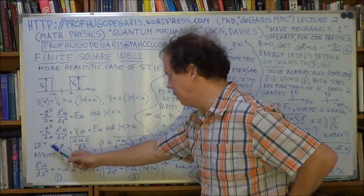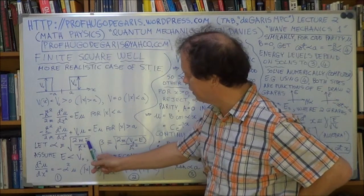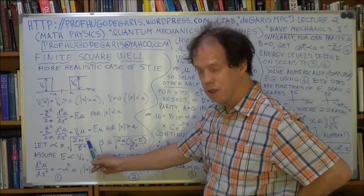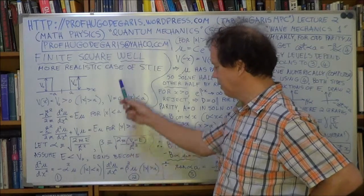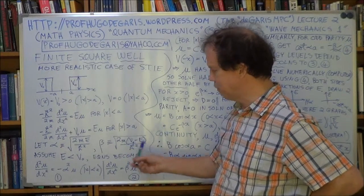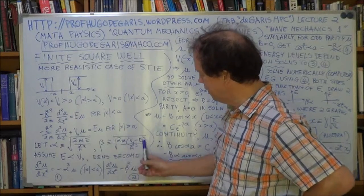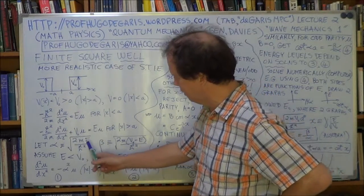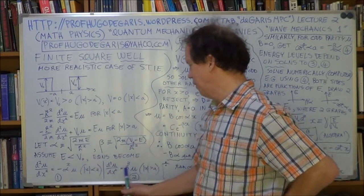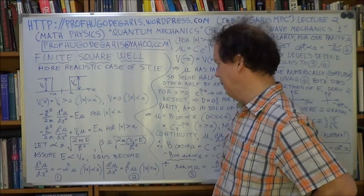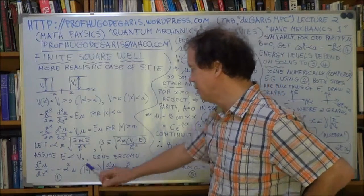Now using these two variables, now they vary because they depend on E and E is a variable, E can change, they're not constants. V0 is constant, m, the mass of particle, is constant, h-bar is constant, but E can change so E is a variable, therefore beta is a variable, E can change therefore alpha is a variable. So alpha and beta depend on the value of E.